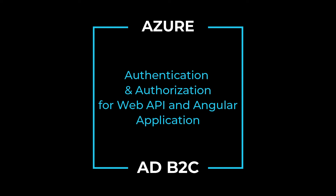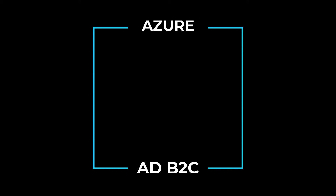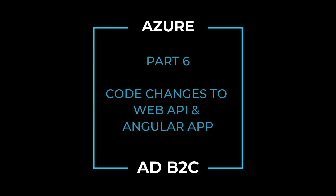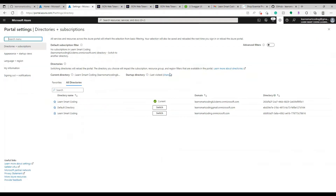We will go through the Azure AD B2C concepts and see how to do the app registration and configure these things in your Web API and Angular application. This is part 6 of the video series, and in this video we're going to see how to configure the code in your Web API and Angular SPA for Azure AD B2C authentication and authorization.